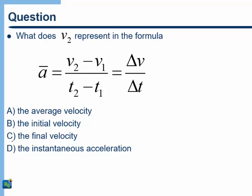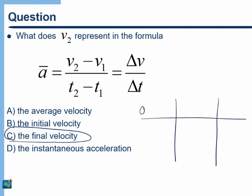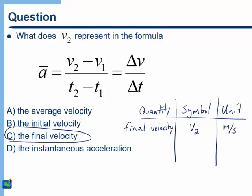The answer to this one is C, the final velocity. This question is just making sure that you've been doing the work of setting up that table of quantity, symbol, and unit. In order to understand the formulas, the first thing you've got to make sure of is that you know what each of the symbols means. In this formula for average acceleration, we know that V2 represents the final velocity. In your table, you should have an entry that says final velocity, V2 as the symbol, and then the unit of meters per second.